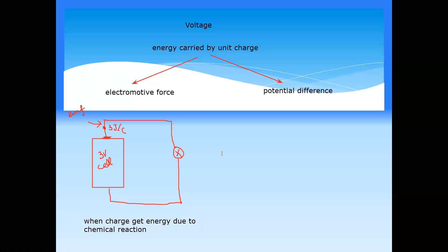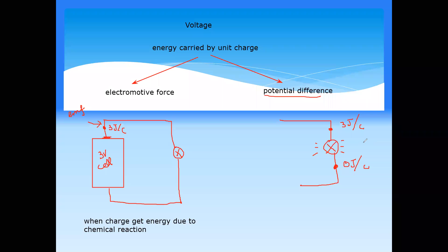When the charges get energy due to a chemical reaction, we call that electromotive force or EMF. But when charges move through the circuit and pass through a component, they transfer their energy so the device can work. When they pass through, they lose their energy — going from three joules per coulomb to zero. The energy transferred by the charge is called potential difference. So the potential difference here is 3V.